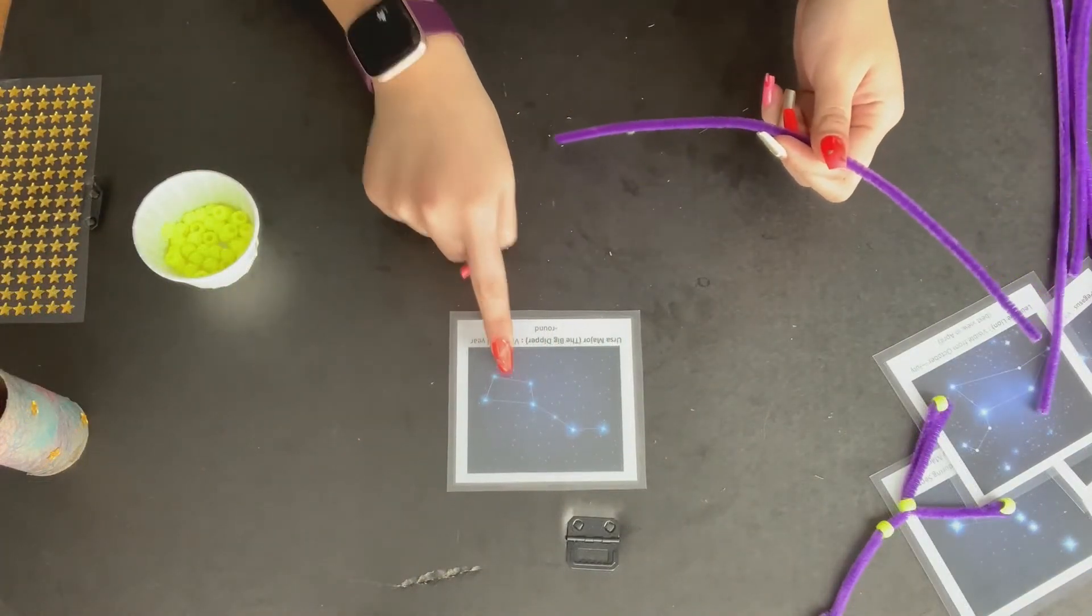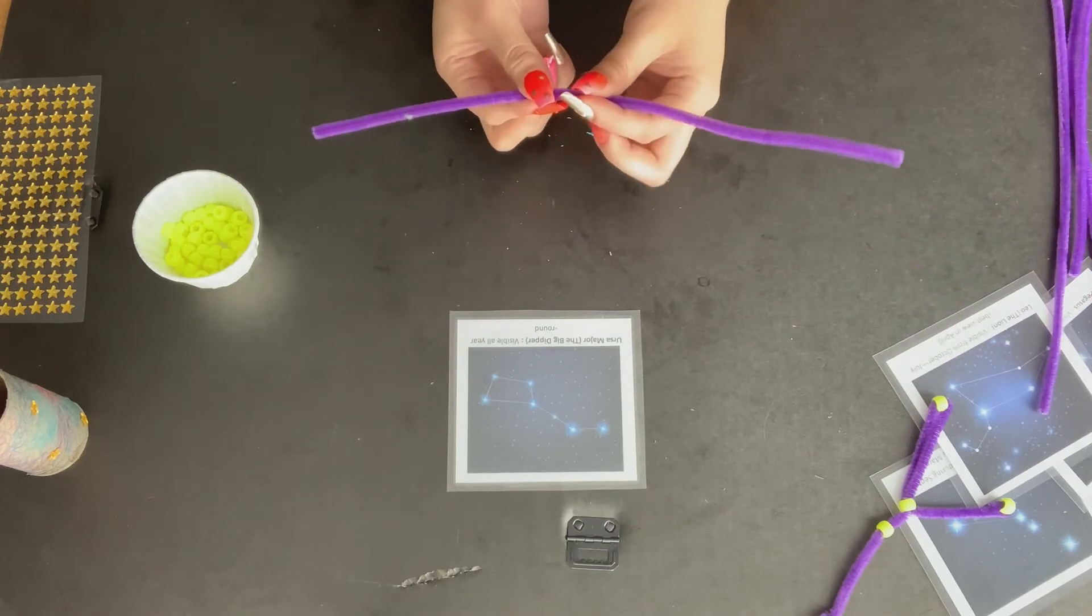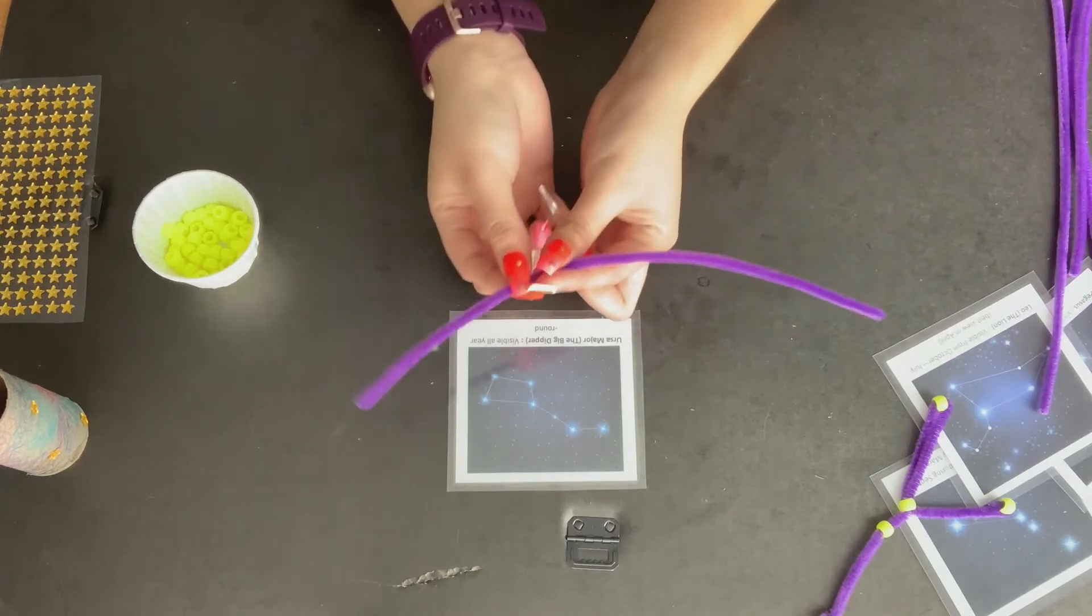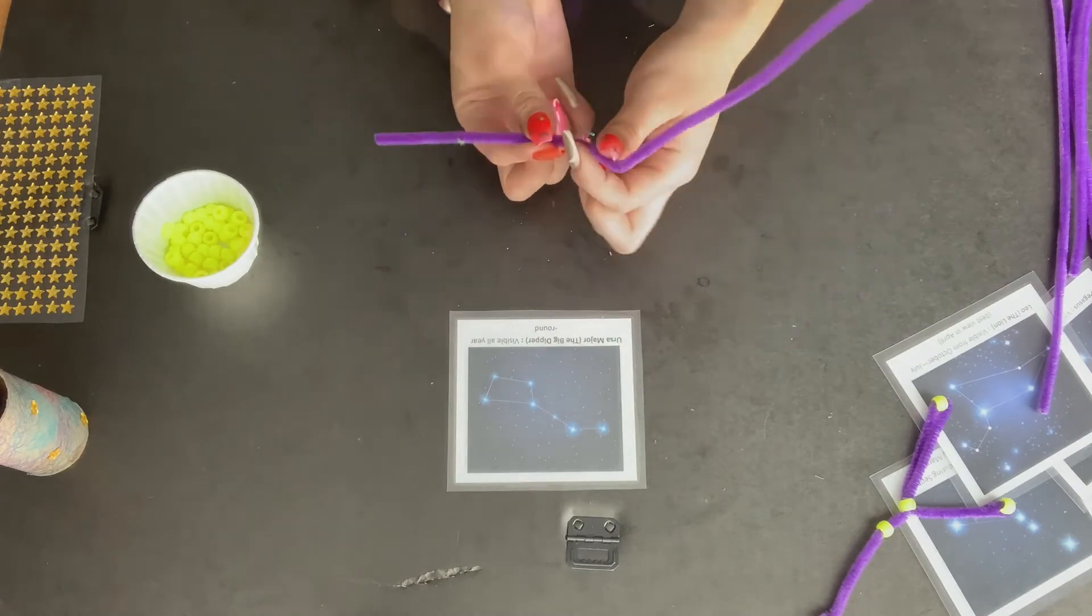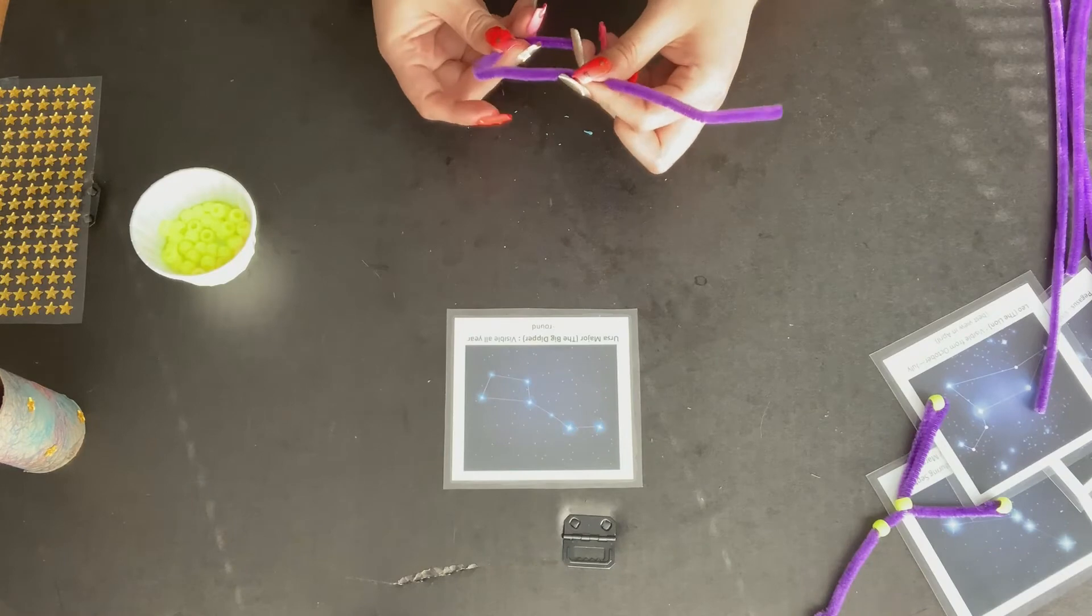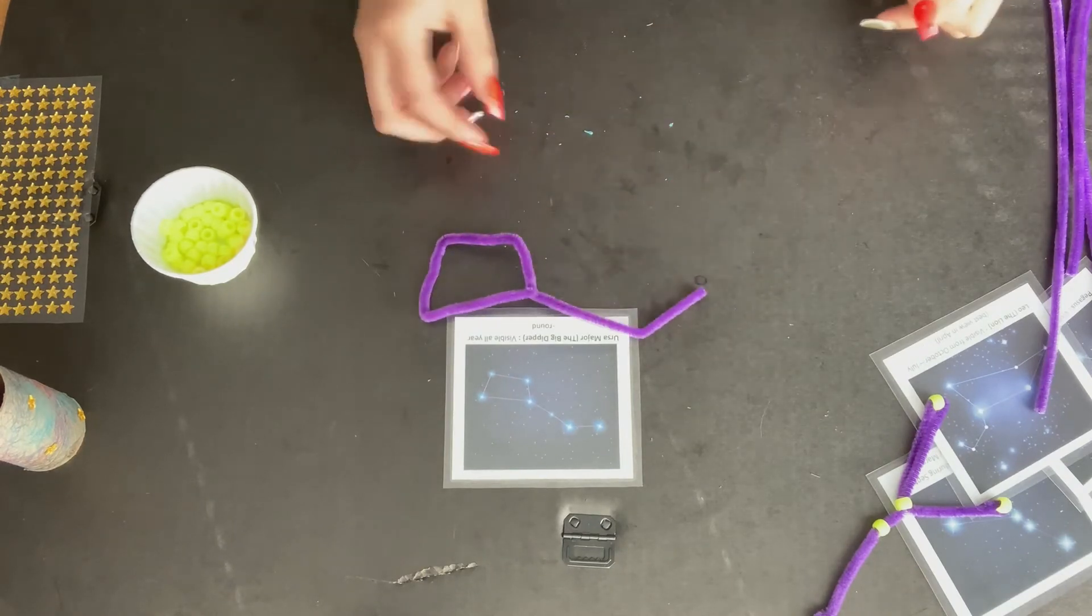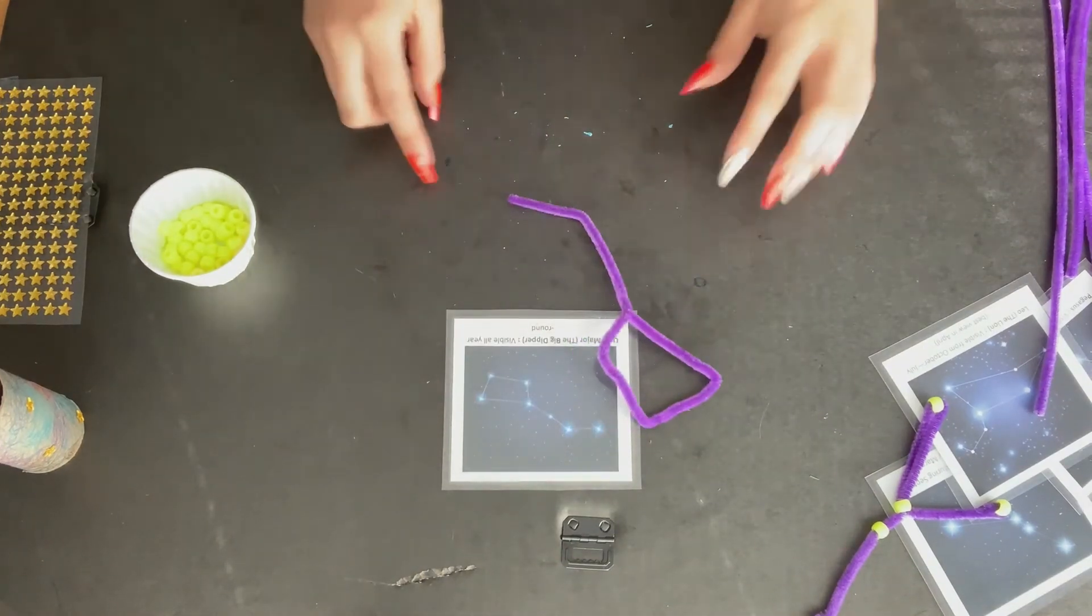To start, I'm going to grab my pipe cleaner again and just begin shaping out the line that I see in our constellation. So we have the rectangular spoon shape and then our handle. How do you think that looks?